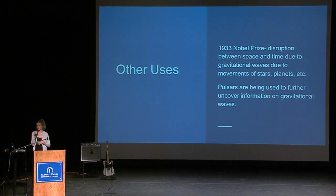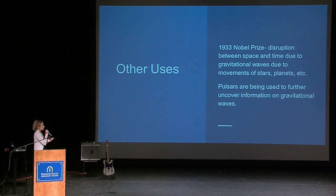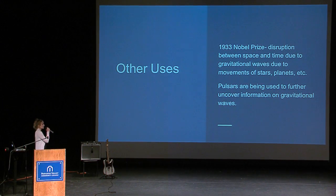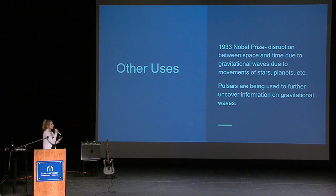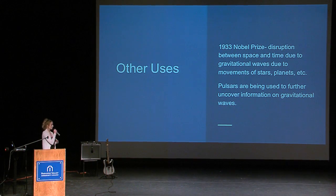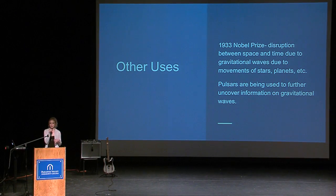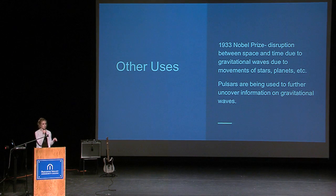As for other uses: two astronomers in 1993 won a Nobel Prize, noticing the disruption between space and time due to gravitational waves caused by movements of stars and planets. Pulsars are being used to further uncover information on gravitational waves. Gravitational waves can be left over from the Big Bang, they can be from black holes, planets moving, or anything of that sort.